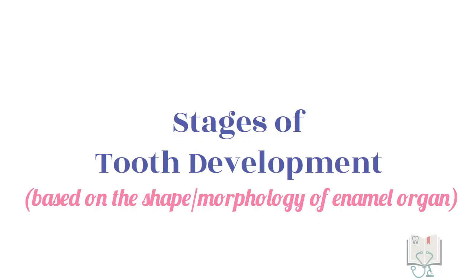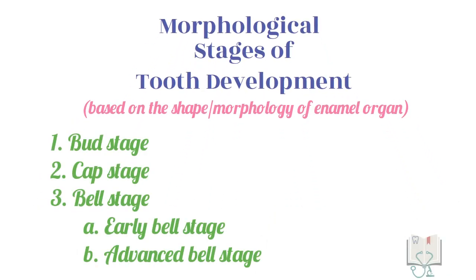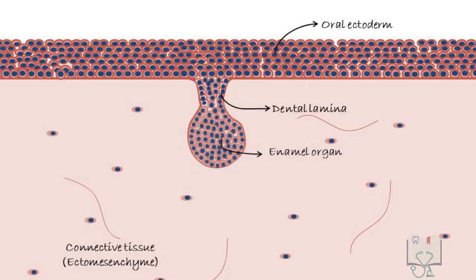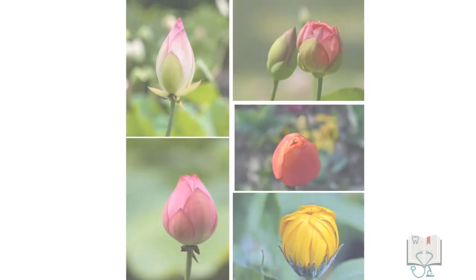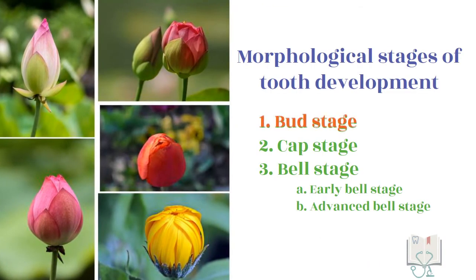The stages of tooth development are based on the shape or morphology of the enamel organ, hence called the morphological stages of tooth development. In the bud stage, the oral ectoderm shows proliferation of cells into the connective tissue to form the dental lamina, which then shows proliferation to form the enamel organ. At this stage, the enamel organ is a round or oval localized growth of epithelial cells. As its shape resembles a flower bud, this stage is called the bud stage of tooth development.